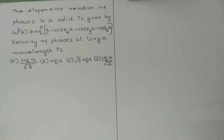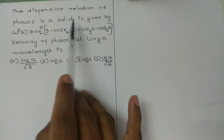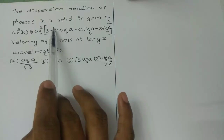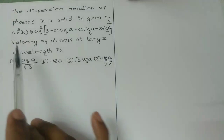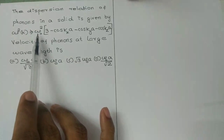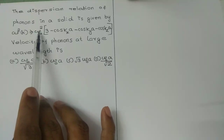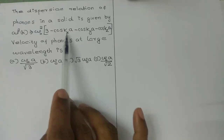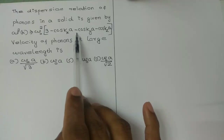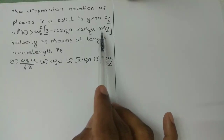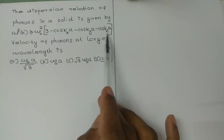Welcome to Candela Physics Academy. The dispersion relation of phonons in a solid is given by omega squared K equal to omega_0 squared times 3 minus cos(KxA) minus cos(KyA) minus cos(KzA).